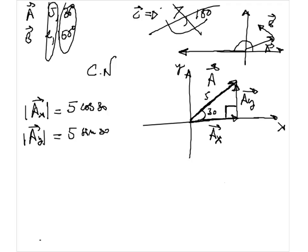So let's write that down mathematically. My vector A is the sum of two vectors, AX and AY. Now I would like to rewrite — the first component is 3.83, and the second one might be 2.5. Is that correct? Sine of 30 is one-half, so AY = 2.5.